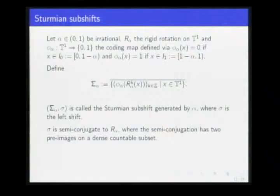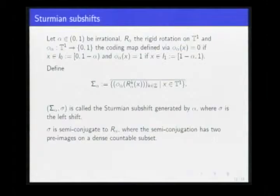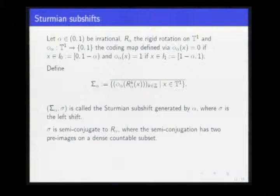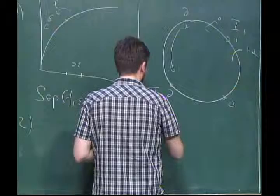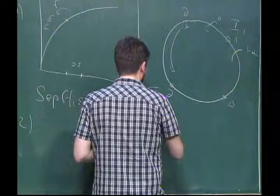A classical result is that the shift on the Sturmian subshift is semi-conjugated to the rotation on the circle. This semi-conjugation has a set where points have two pre-images; everywhere else there is just one pre-image. This set has measure zero with respect to the natural invariant measure, namely the Lebesgue measure. So our corollary applies. If you study the actual growth behavior further, you can show that the new separation complexity of the Sturmian subshift is one.